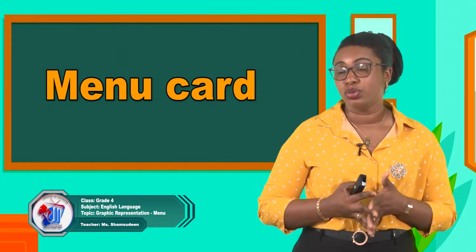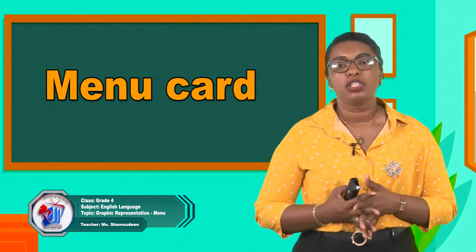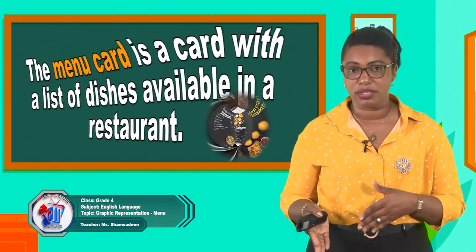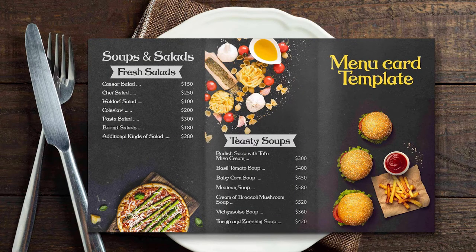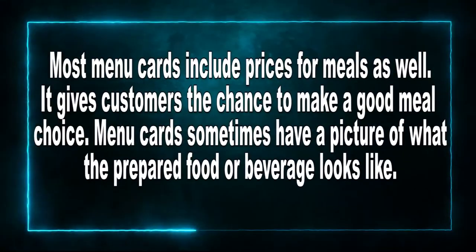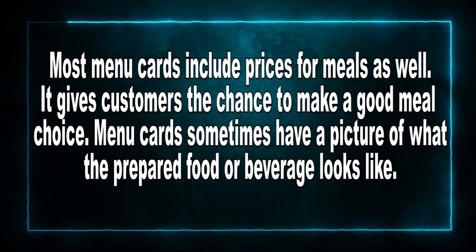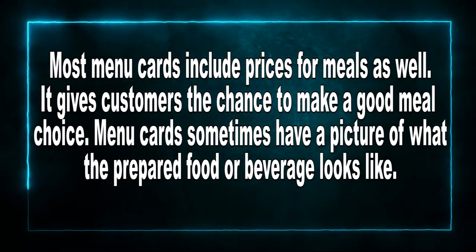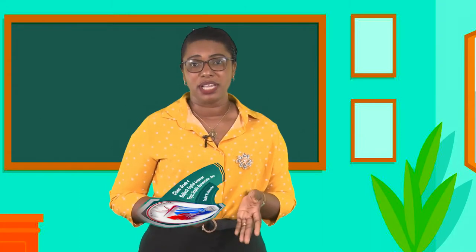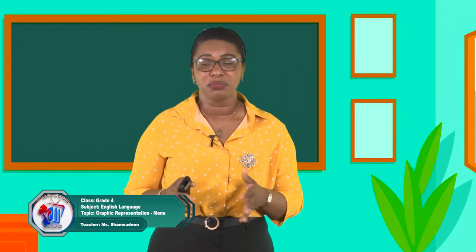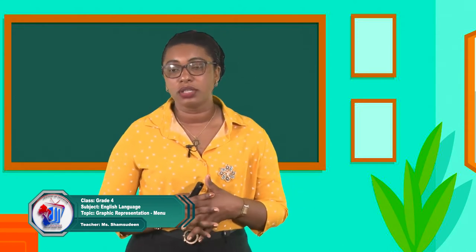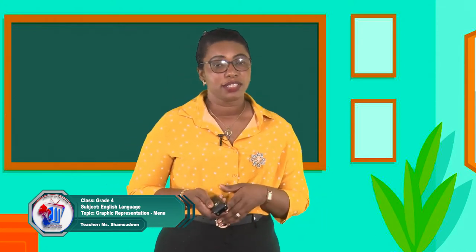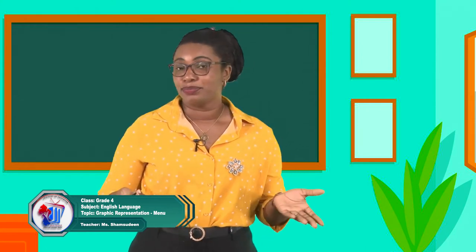Then we have the Menu Card. The Menu Card is a card with a list of dishes available in a restaurant. Most Menu Cards include prices for meals, giving customers the chance to make good meal choices. Menu Cards sometimes have pictures of what the prepared food or beverage looks like, so even if the name is unfamiliar, the picture helps you decide. And if you're on a budget, you can look at the prices and choose accordingly.